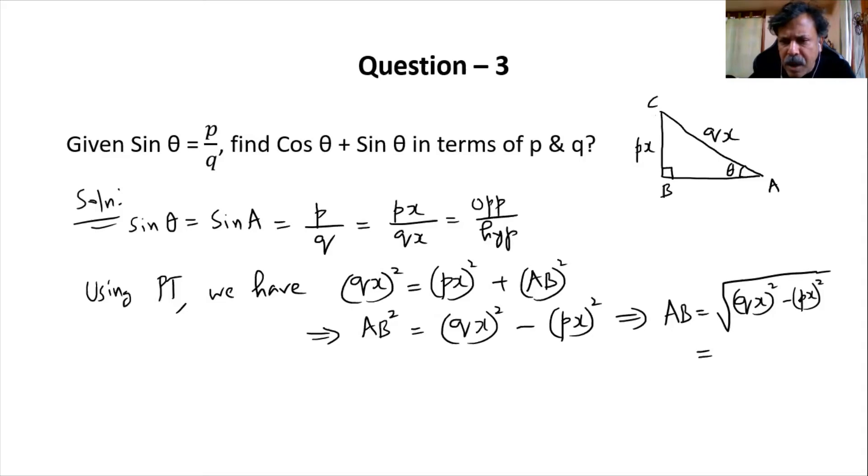In both of these, x square will be common. If I take it out, it will become x root of q square minus p square. That is your AB.